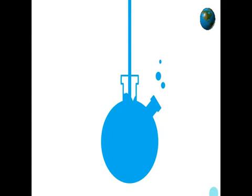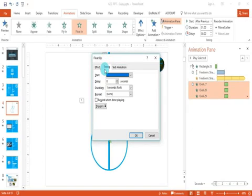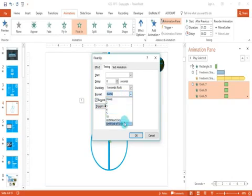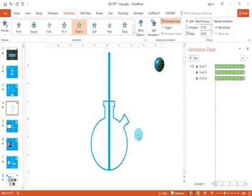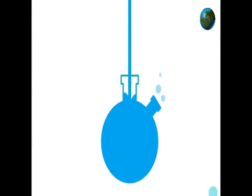The final step is to make the bubbles move back and forth automatically. Select all the oval shapes in the animation pane, right-click, go to effect options, select timing, check rewind when done playing, or click the repeat dropdown and select until end of next slide. Click OK. Now when you watch the slideshow, the water falls, fills the flask, and the gaseous bubble molecules move upward automatically. I hope you enjoyed this video — please like and subscribe for the latest updates. Thank you and have a good day, bye bye!